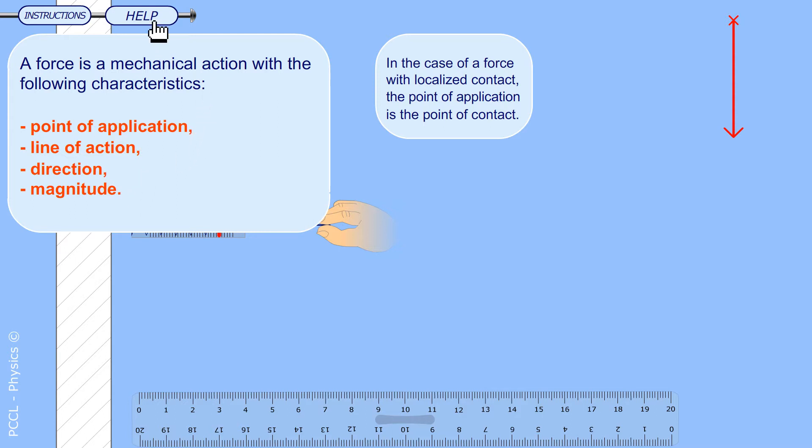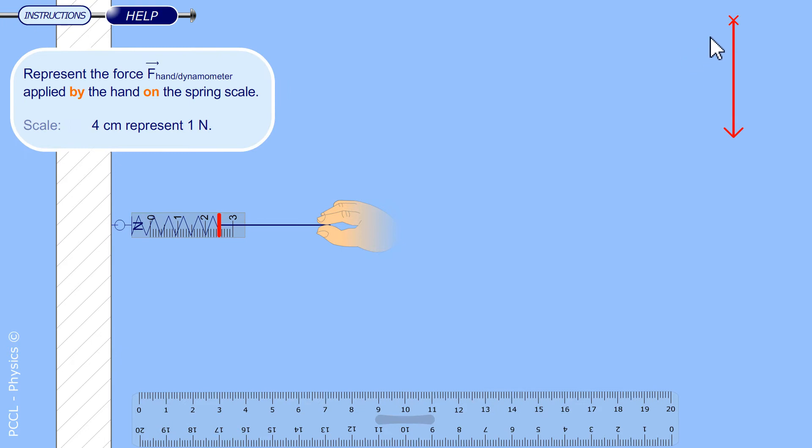Here the action is a contact force. The origin of the vector will be this point of contact. There is only one. The line of action is given by the segment which is there.